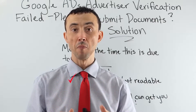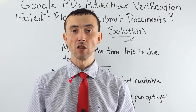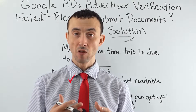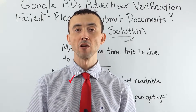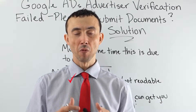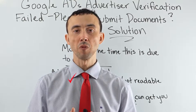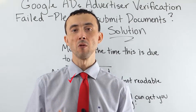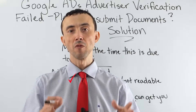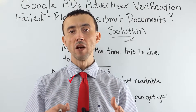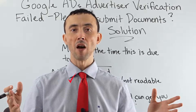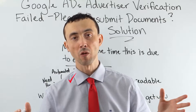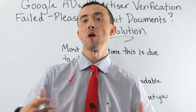That gives the algorithm checking the document the greatest ability to read the data on it — and it is literally an algorithm, a computer, you're dealing with. If it were a human, it'd be different. You wouldn't have to be so particular. You're also dealing with an automated system that buckets everything into two or three vague rejection reasons that don't give you enough information to work from when your documents get rejected.